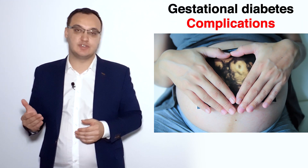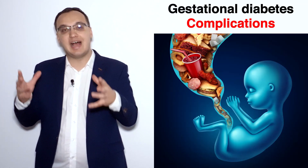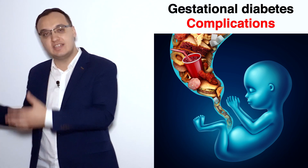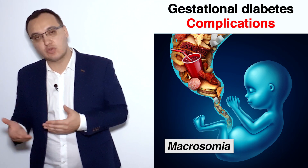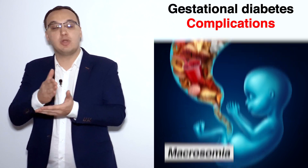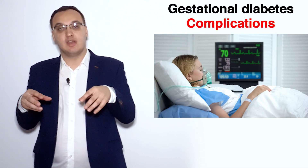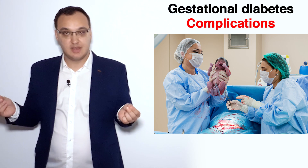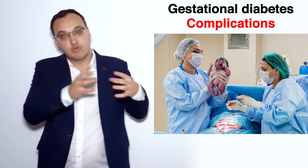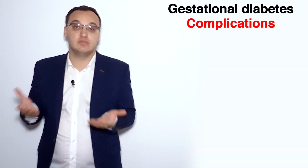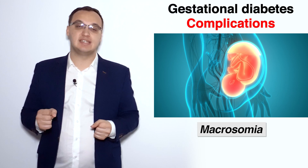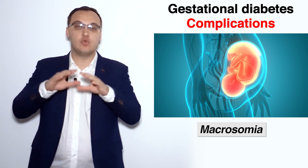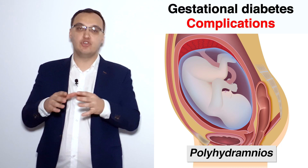Gestational diabetes has serious complications for the mother and child. If there is too much sugar, the child will grow too much — this is called macrosomia. Macrosomia can lead to perinatal complications such as birth trauma, requiring an operative delivery like a cesarean section, because the baby cannot follow the normal birth path. The shoulders may be too wide or the head too large.